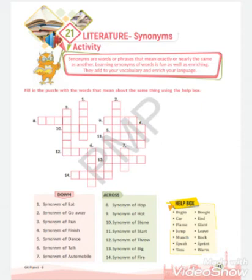Let us take the first word. Synonym of eat, to eat something, that is munch, M-U-N-C-H, the chocolate name you must have heard. Synonym of go away: leave. Synonym of run: that is sprint, S-P-R-I-N-T. Synonym of finish: end, number four. You have to write this downwards. Synonym of dance: that is boogie. You must remember the show Boogie Woogie that was based on dance.